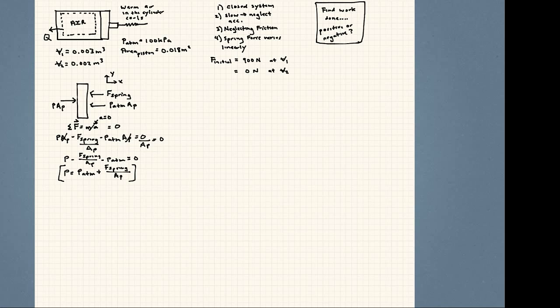So basically we have a statics problem. Now if we balance the forces acting on this, keep in mind this is the area of the piston for both cases. So sum of the forces on this system are pressure times area of the piston minus force of the spring minus P atmosphere times area of the piston, and that's all equal to zero. If I divide all of these now by area of the piston, zero divided by area of the piston is zero still.